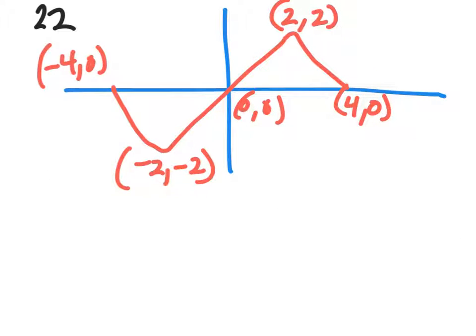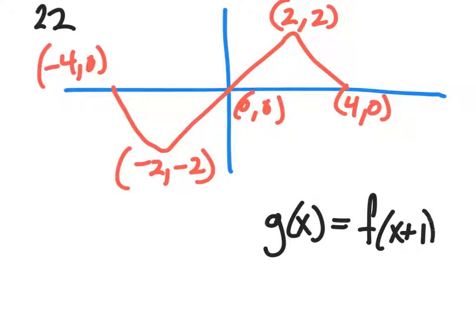For number 22, we've got g of x is equal to f of x plus 1 minus 2. Here we've got two transformations. The first is x plus 1 means that each point is going to move left 1. Minus 2 at the end means that each point is going to move down 2.